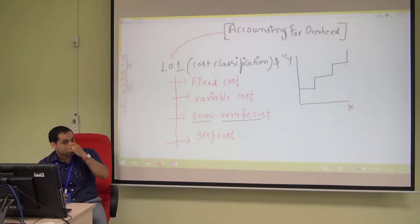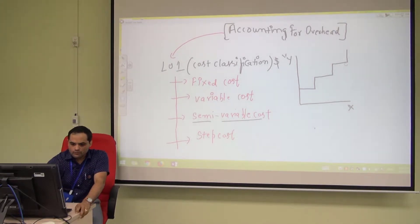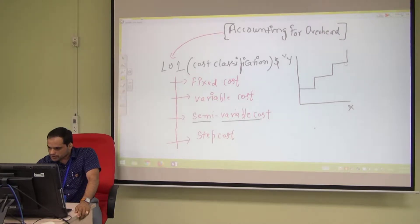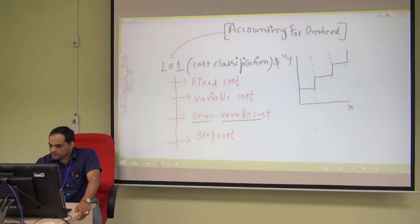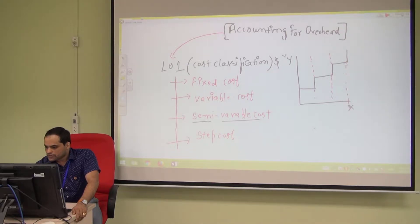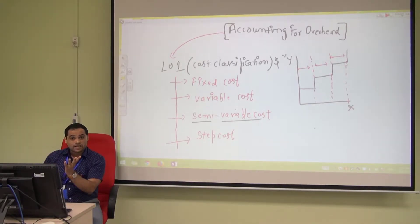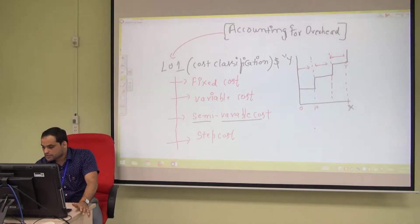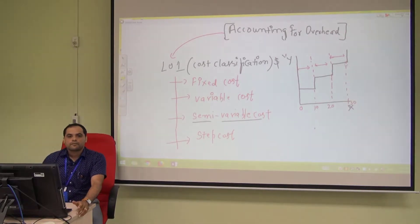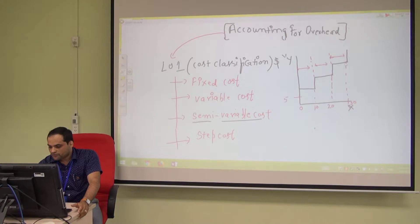This is the graph of step cost, which looks like steps. Within a particular range, your cost is fixed. But if you cross that range, your cost increases. For example, the activity axis goes 0, 10, 20, 30 and the cost axis goes 50, 100, 150, and so on.